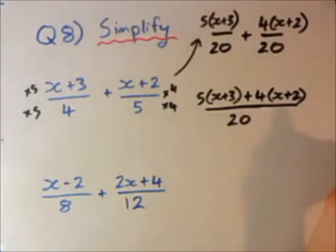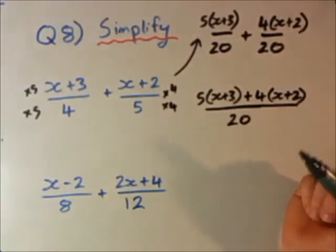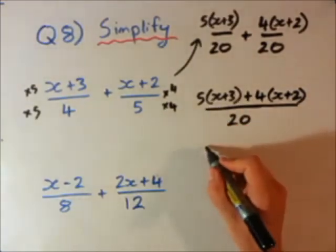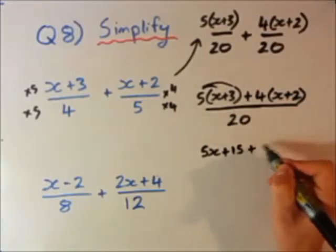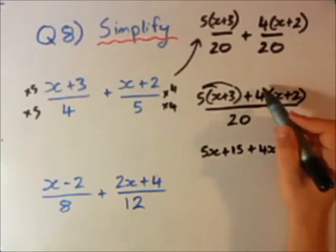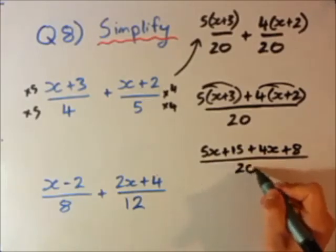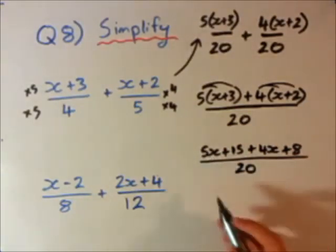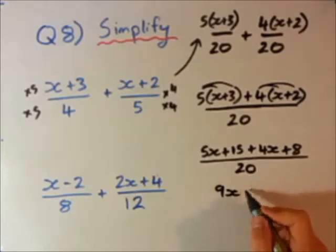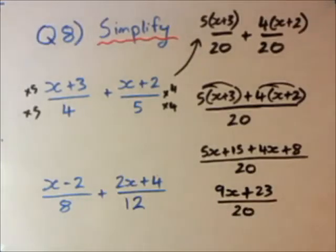I times the left fraction top and bottom by 5, giving 5(x plus 3). I times the right fraction top and bottom by 4, giving 4(x plus 2). Now the denominators are the same, so I write it all over 20: 5(x plus 3) plus 4(x plus 2). Expanding: 5x plus 15 plus 4x plus 8, all over 20. Adding like terms: 5x plus 4x is 9x, and 15 plus 8 is 23. Final answer: 9x plus 23 over 20.